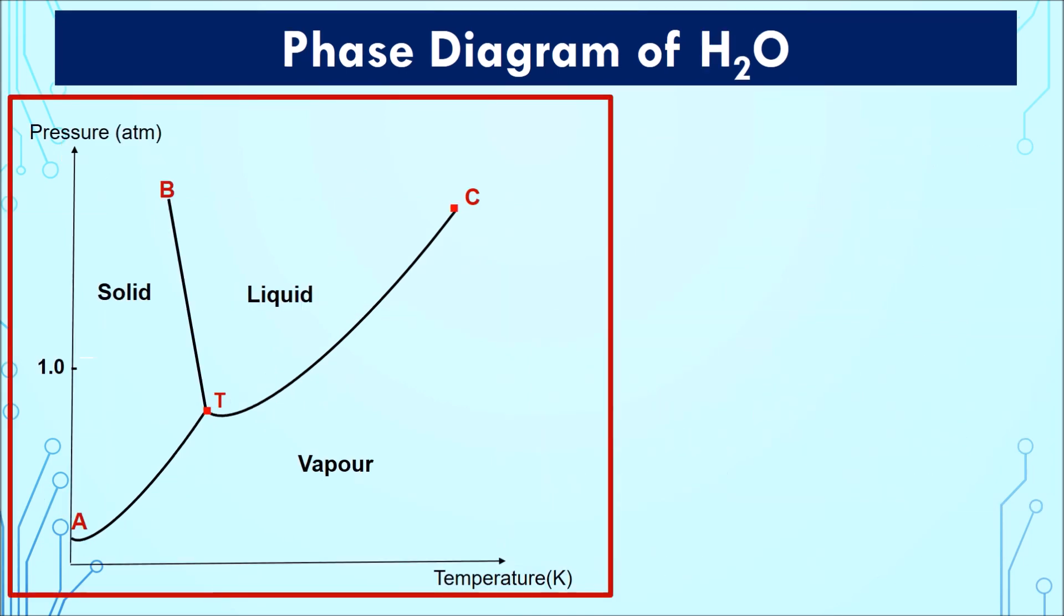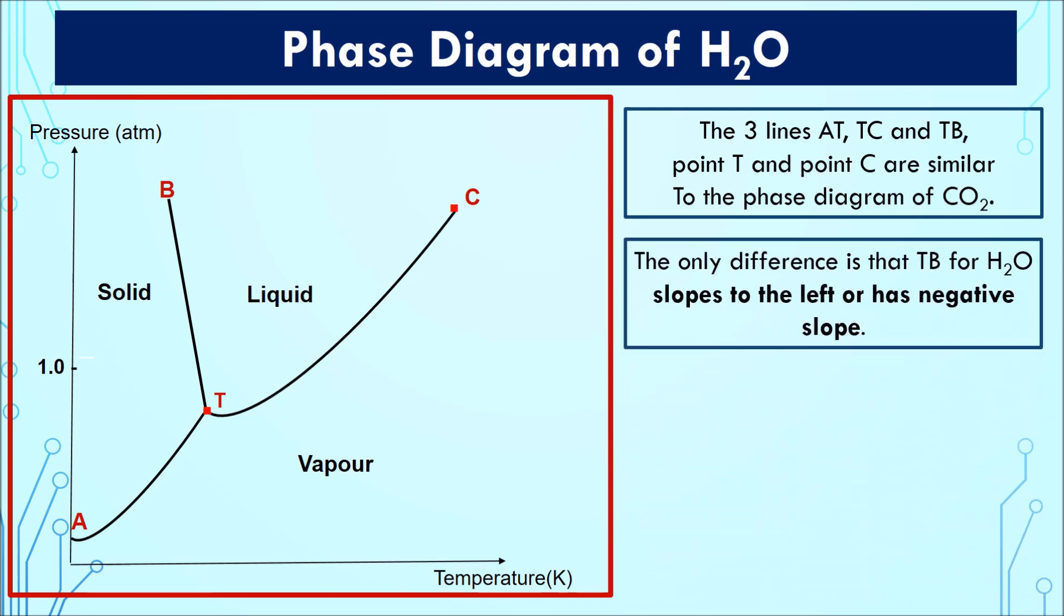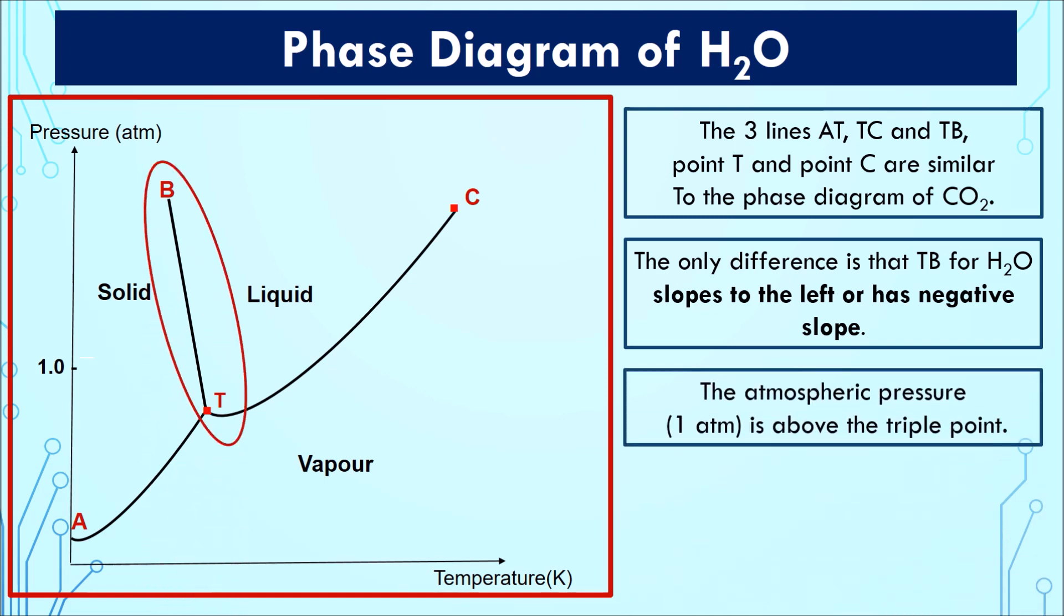Here is a phase diagram of water. As you can see, it is very much similar to that of carbon dioxide. However, the only difference is that line TB for water slopes to the left and has a negative gradient. Next, the atmospheric pressure of 1 atm is above the triple point.